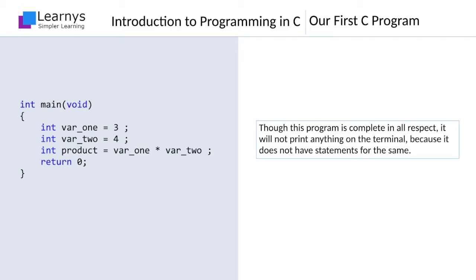Well, when you run the program, you won't observe anything happening because the program has not included any statement to display the result and other relevant information. And hence, the program silently multiplies 3 and 4, stores the result in the variable named product, and exits.